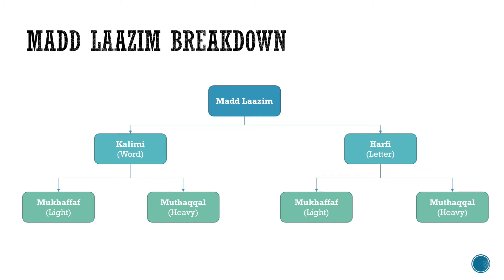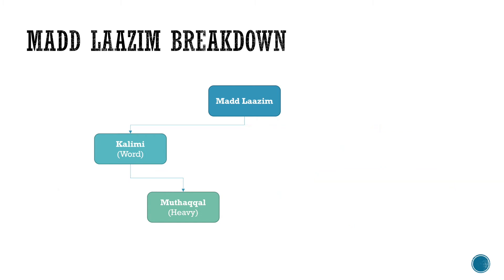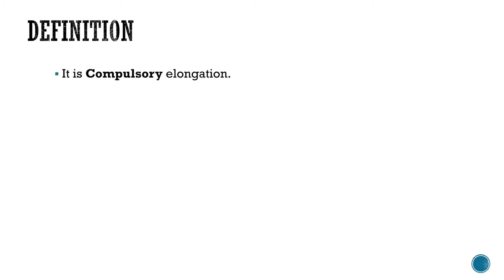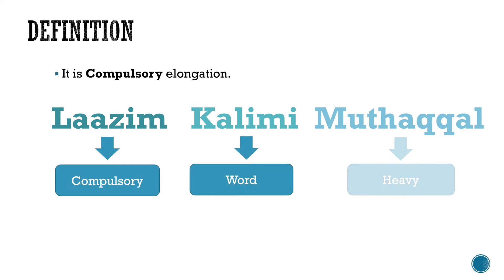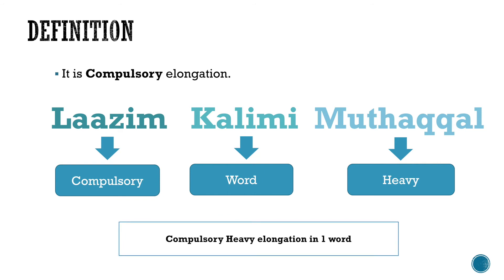We will be focusing now on مَدْ لَازِمْ كَلَمِي مُثَقَّل. So what is the definition of مَدْ لَازِمْ كَلَمِي مُثَقَّل? It is a compulsory elongation. لَازِمْ means compulsory, كَلَمِي means word, and مُثَقَّل means heavy. Hence: compulsory heavy elongation in one word.